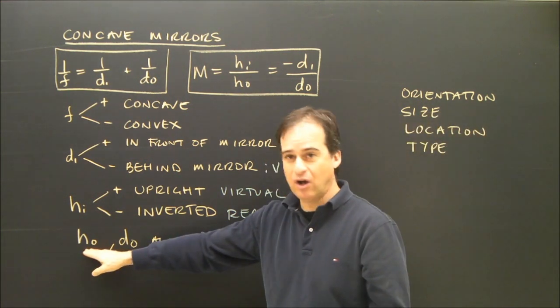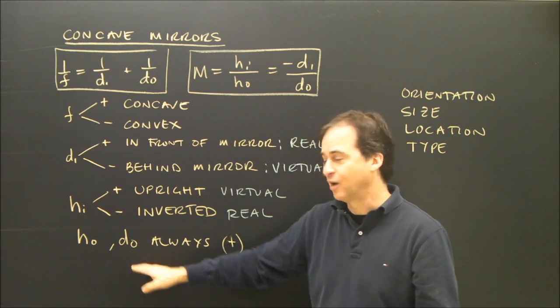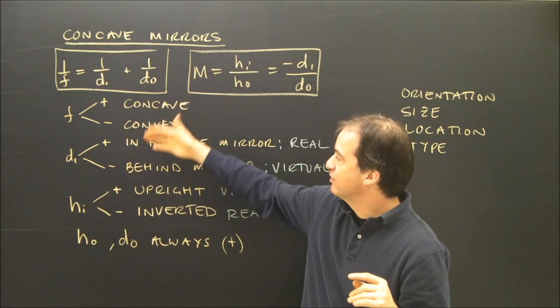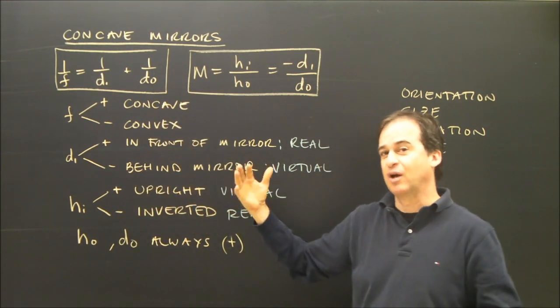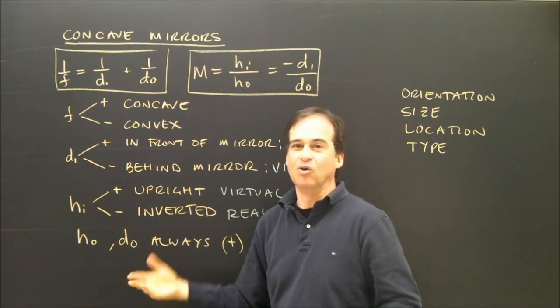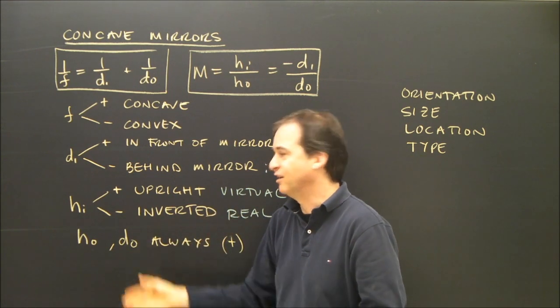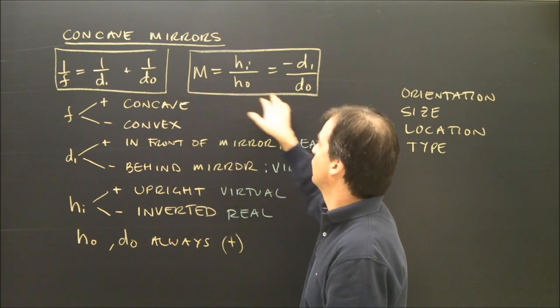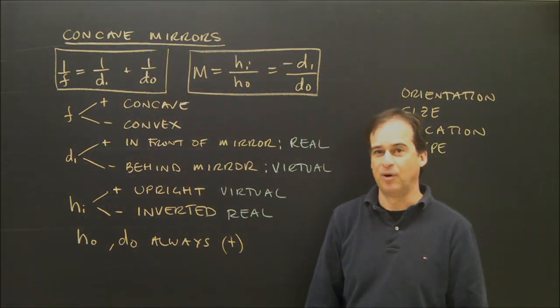And HO, the object, and the distance to the object are always positive. Because we have an object, what's the image look like? We need positives and negatives to describe the image. The object, we know, whatever it is, its orientation is upright and the distance is the distance. So these are always positive. Here are the two formulas we're going to use. Let's do a sample problem.